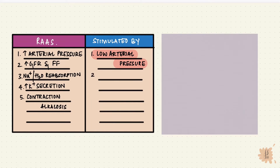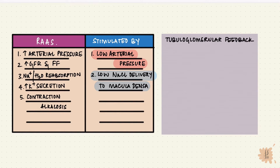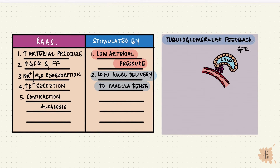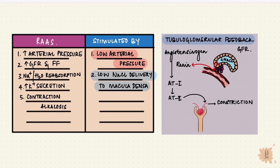Second, low sodium chloride delivery to the macula densa. This forms part of the tubuloglomerular feedback, which maintains a constant GFR over a wide range of renal plasma flow. If there's a low sodium chloride level in the distal convoluted tubule, the macula densa detects it, tells the JG cells that renin is needed, renin is released, converting angiotensinogen to angiotensin-1 and then angiotensin-2, which constricts the efferent arteriole and increases GFR, restoring the sodium chloride concentration.